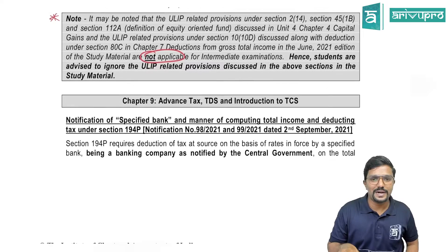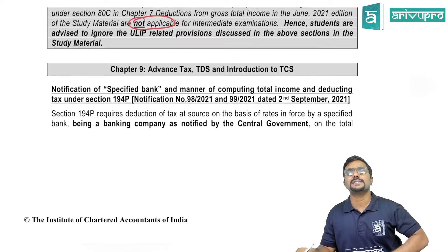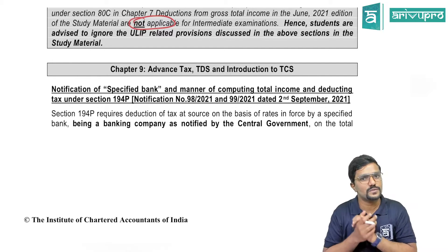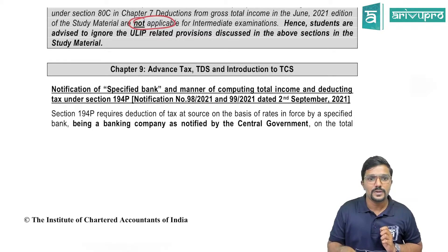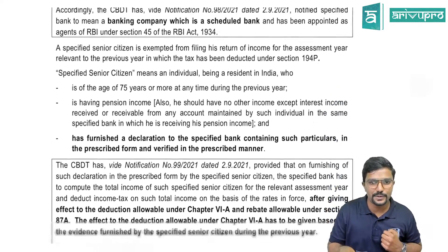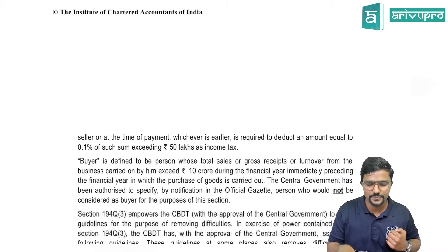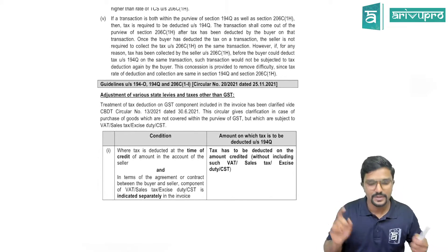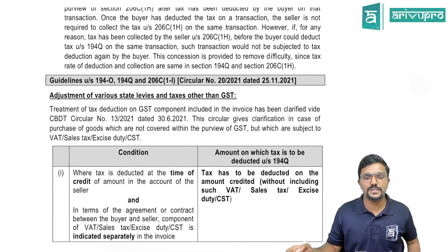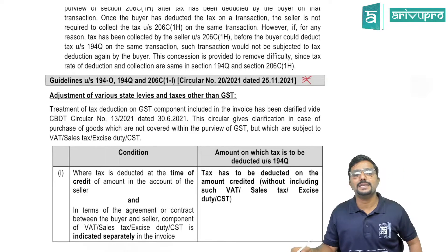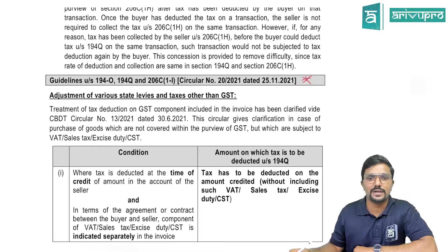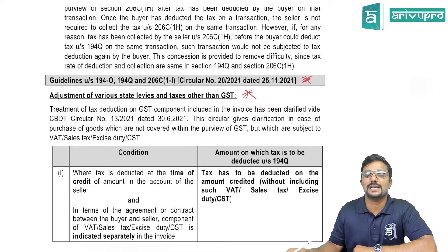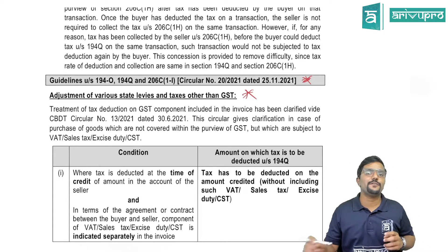Let us go to the next part: Chapter 9 — Advanced Tax, TDS, and Introduction to TCS. Most of this topic was already covered in our May 22 statutory update. The new part here is guidelines under Section 194O, 194Q, and 194C(1H) — specifically regarding adjustment of various state levies and taxes other than GST.